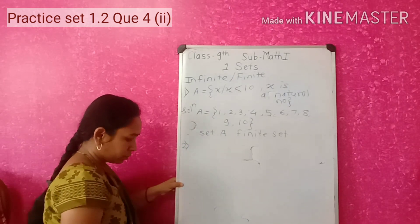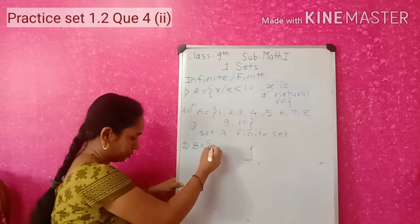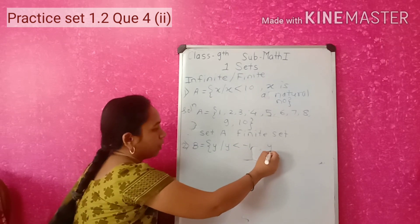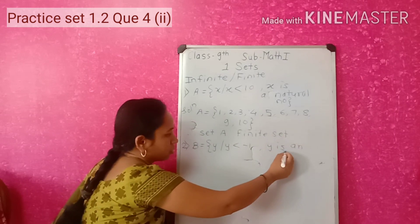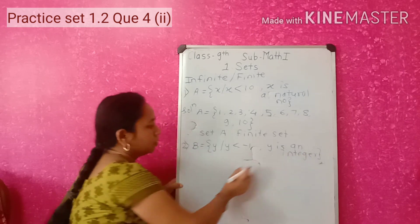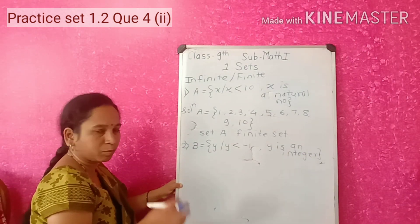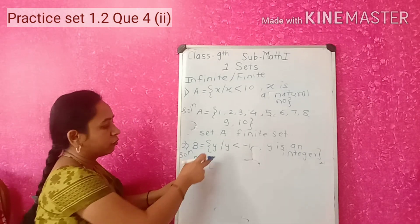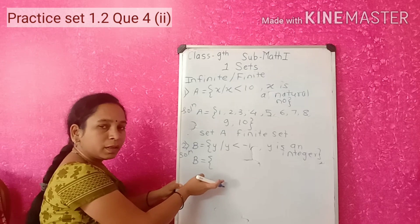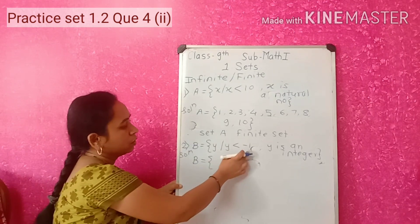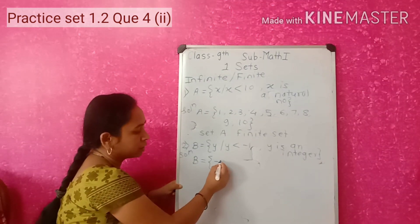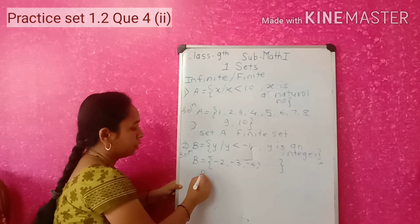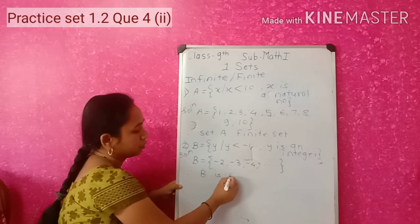Second example: Set B is y such that y is less than minus 1 and y is an integer. Integers include both negative and positive numbers. Converting to listing method, values less than minus 1 are: minus 2, minus 3, minus 4 — and they go on uncountably. Therefore set B is an infinite set.